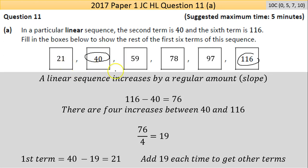And once we know that, we can take 19 from 40 to go back to the first term. Then add 19, 19, 19 to get the other three figures and our sequence is fully filled in. That's part A.